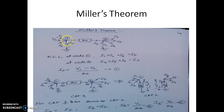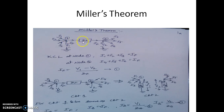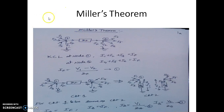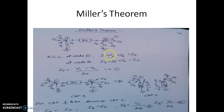Miller's theorem: consider a generalized network with node 1 and node 2 with respect to ground. The voltage at node 1 is V1 and at node 2 is V2. Currents I1, I2, I3 enter node 1, and current IF flows through the floating impedance ZF between nodes 1 and 2. At node 2, IF equals I4 + I5 + I6 leaving. Writing KCL: I1 + I2 + I3 = IF, and I4 + I5 + I6 = IF.